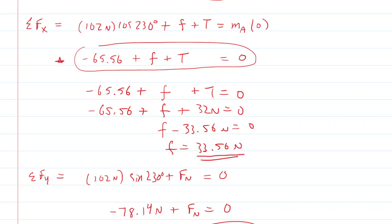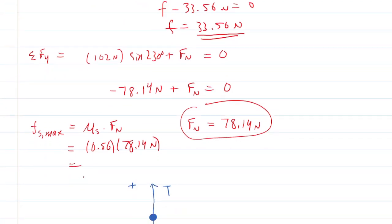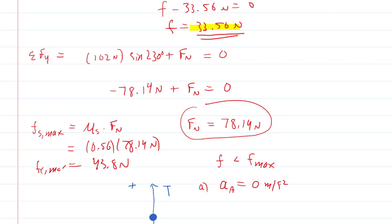The reason we calculated friction that way is to compare it to the maximum static frictional force. The maximum static frictional force equals the coefficient of static friction multiplied by the normal force. Taking the coefficient of static friction of 0.56 and multiplying by the normal force of 78.14 newtons, the maximum static frictional force is about 43.8 newtons. Our actual frictional force is only 33.56 newtons — less than the maximum. This means block A, which started at rest, will remain at rest. Therefore, the acceleration of block A in part A is 0 meters per second squared.